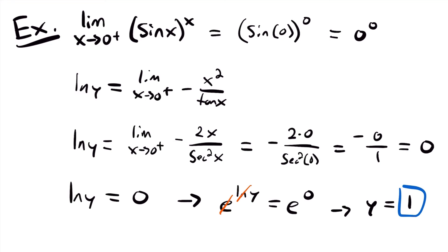That's the method we use for limits with indeterminate forms involving exponents — 0 to the power of 0, 1 to the power of infinity, or infinity to the power of 0. You set y equal to your limit, introduce a natural log, use log properties to move the exponent, then apply L'Hôpital's Rule as needed. That's all for this lesson on L'Hôpital's Rule. If you want more examples, check the examples video linked at the end. If you have any questions, leave them in the comments — see you next time.